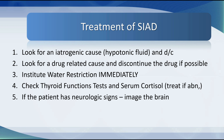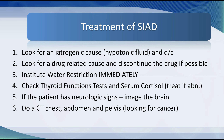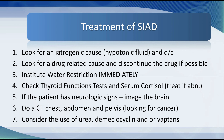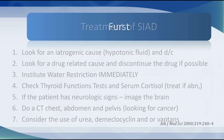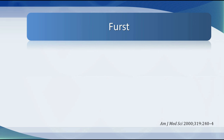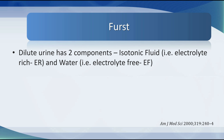If the patient has neurologic signs, image the brain and do a CT of the chest, abdomen, and pelvis looking for cancer. If water restriction isn't enough, consider salt tablets and diuretics. Alternatively you can use urea, demeclocycline, or vaptans.